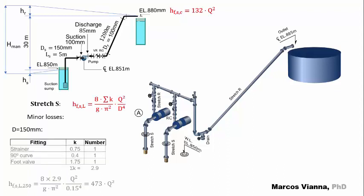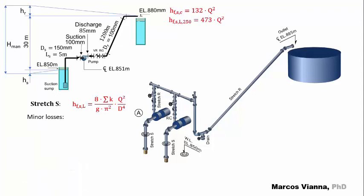Let's draw this table containing the fittings. Here they are. Here are the values of their coefficients and their quantities. We just have to multiply the coefficients by their quantities and sum their products. Then we bring the results to the formula and find this expression. We'll leave it up here and continue with the minor losses in the suction.